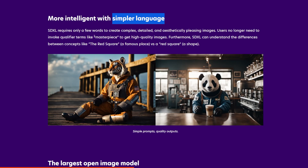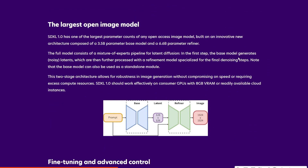Maybe things like 'Best Quality', 'Low Res', 'High Res' — all that good stuff. It is the largest open image model with 3.5 billion parameters in its base and 6.6 billion in the refiner. We will talk about the refiner soon. And it should work effectively with GPUs with 8 gigabytes of VRAM.